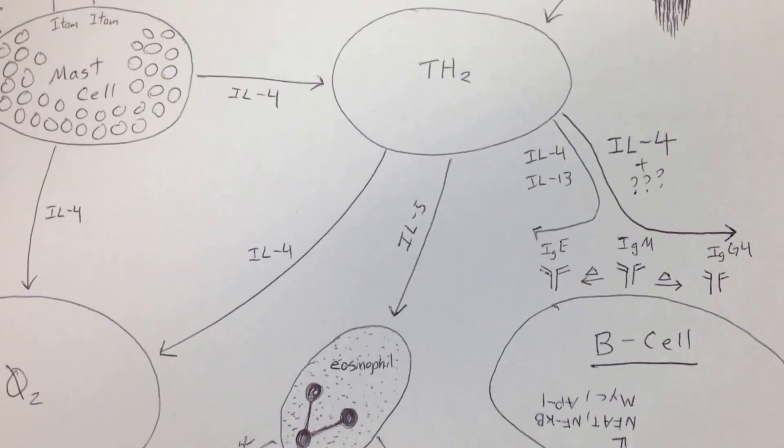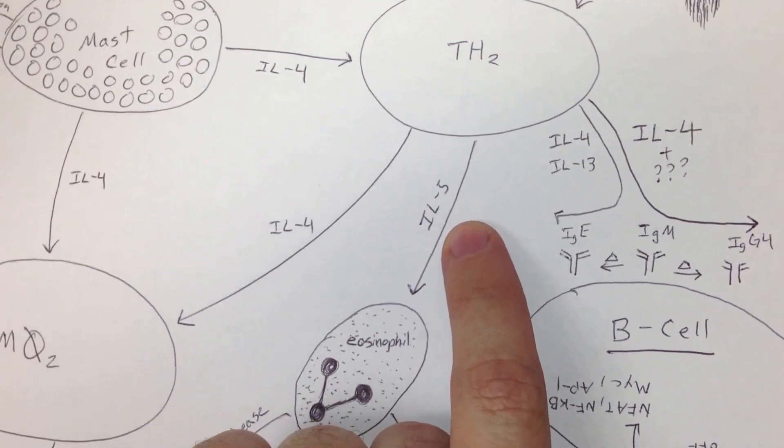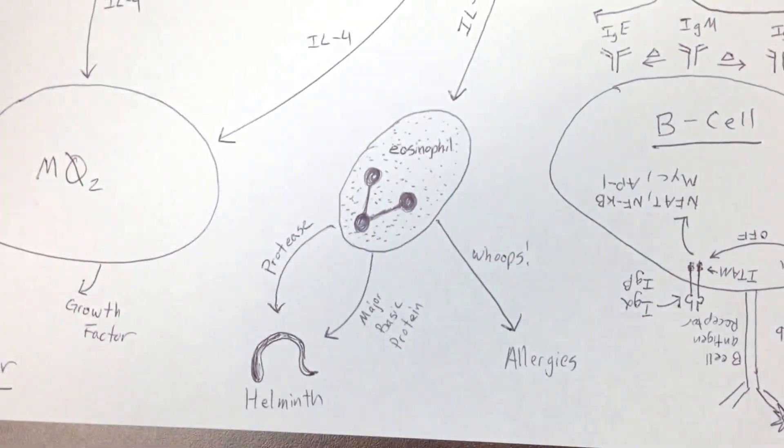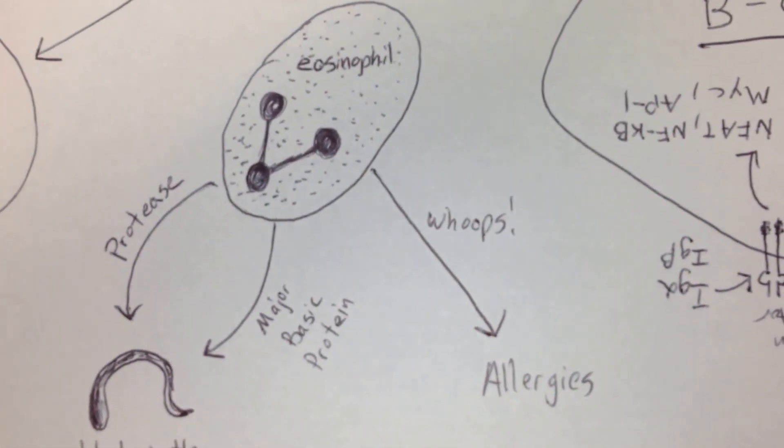The T helper 2 cell can also secrete interleukin 5. So it's not 4 anymore, now it's 5. And that will tell the eosinophil over here to get to work.